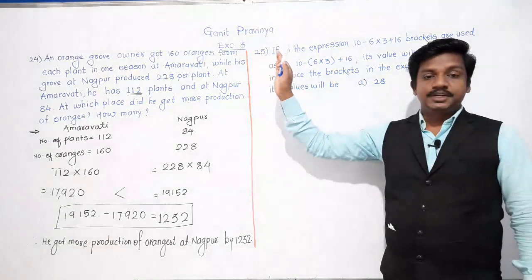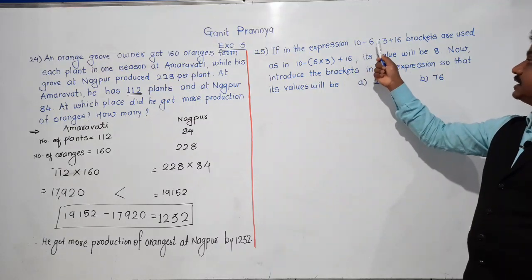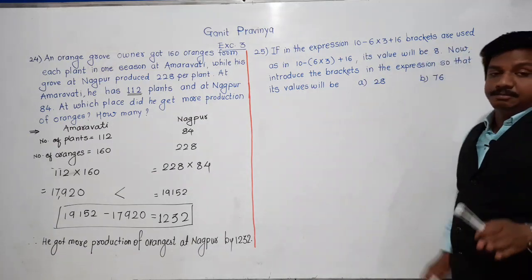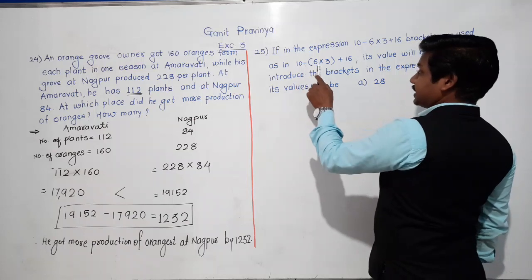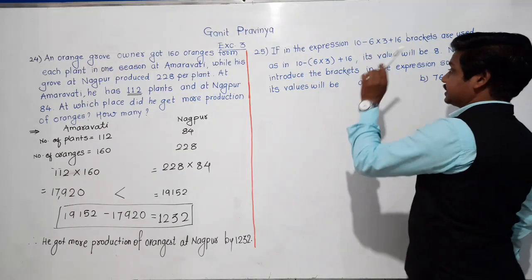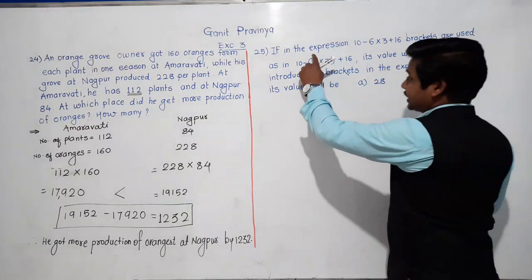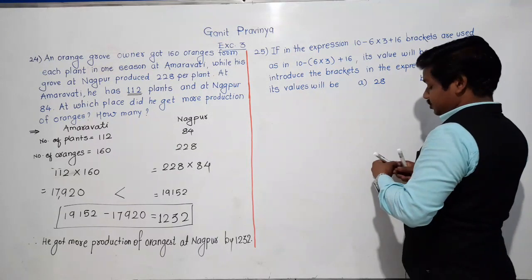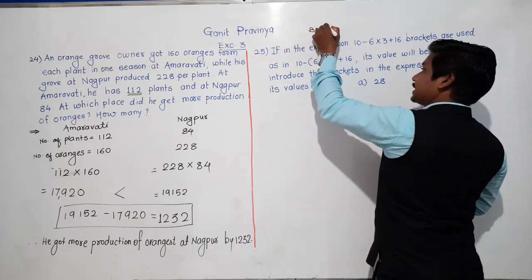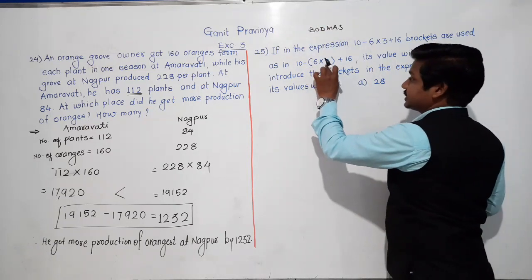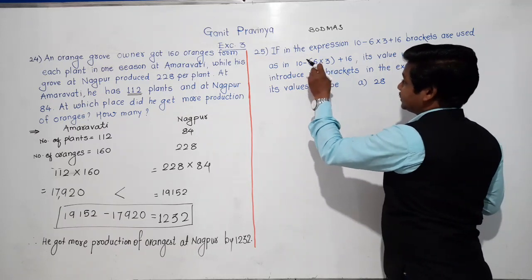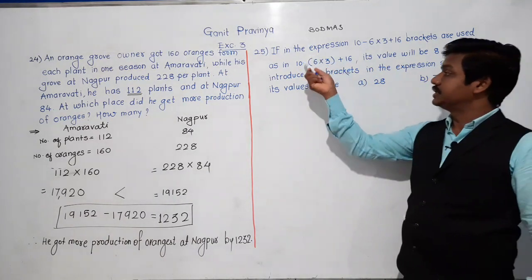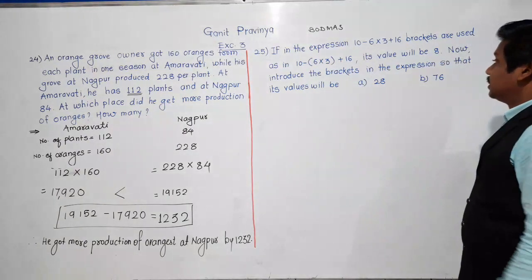The question is: in the expression 10 − 6 × 3 + 16, if brackets are used as (10 − (6 × 3)) + 16, its value will be 8. According to our BODMAS rule, we solve brackets first. So bracket: 6 × 3 = 18, then 10 − 18 + 16: 10 + 16 = 26, and 26 − 18 = 8. Correct. So when brackets are put around 6 × 3, the value is 8.